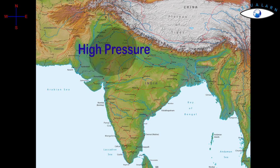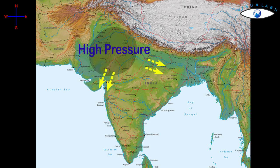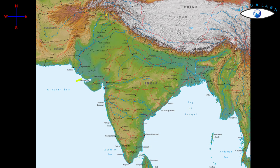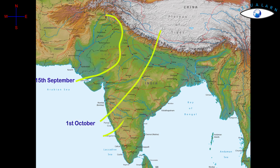The withdrawal or retreat of the monsoon is a more gradual process. During October–November, with the apparent movement of the sun towards the south, the low pressure over the northern plain becomes weaker. This is gradually replaced by a high-pressure system, and the southwest monsoon weakens and starts withdrawing gradually. The withdrawal begins from the northwestern states of India in early September. By mid-October, it withdraws completely from the northern half of the peninsula, and by early December, the monsoon has withdrawn from the rest of the country.